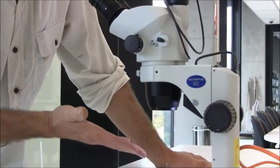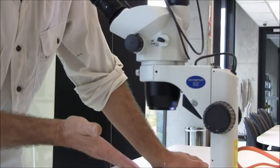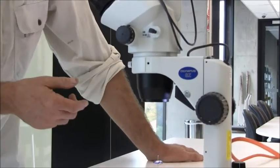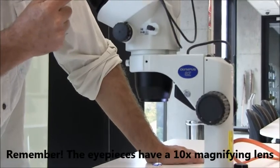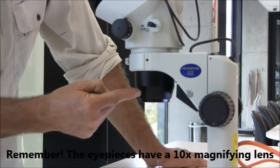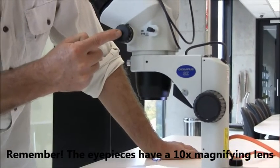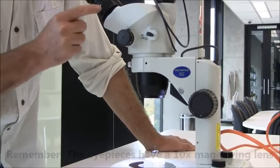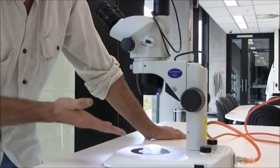Now what we're currently magnifying this specimen at 6.7, because the eyepiece is times 10, and because the objective lens, controlled by this knob, is 0.67, 10 times 0.67 is 6.7.